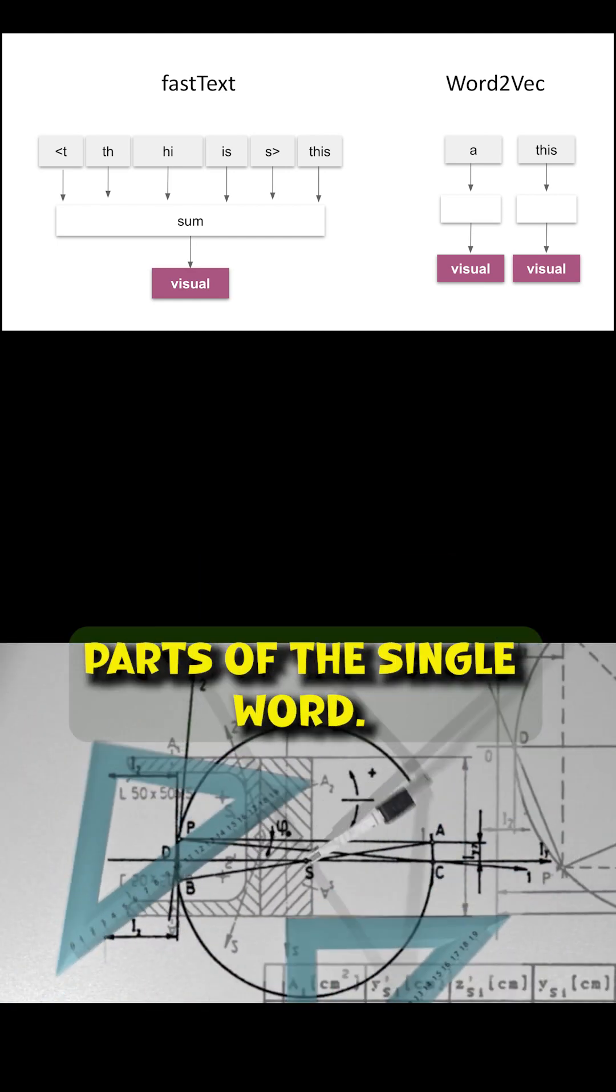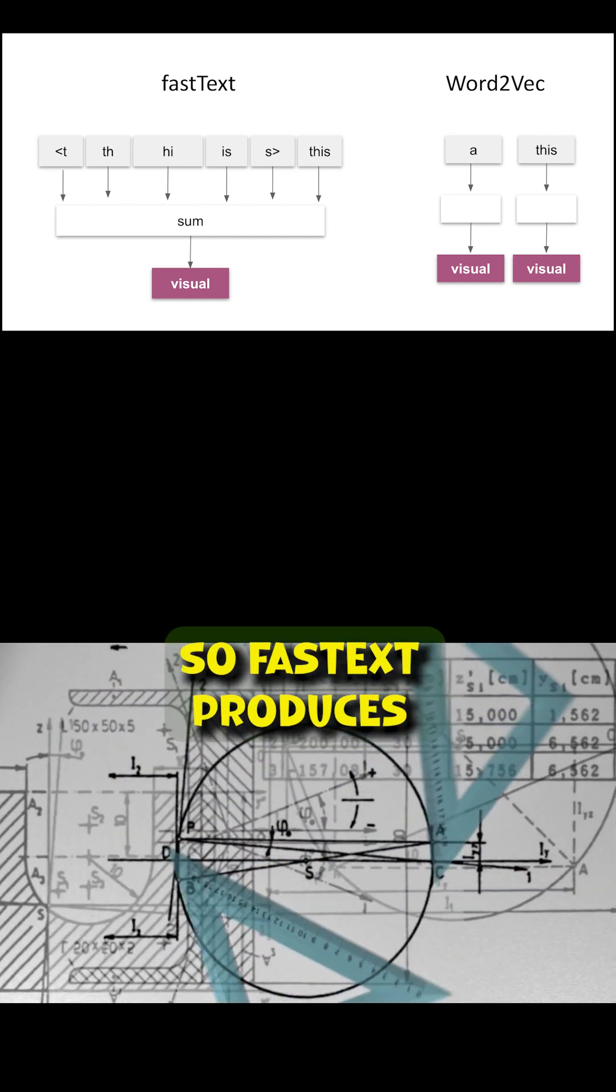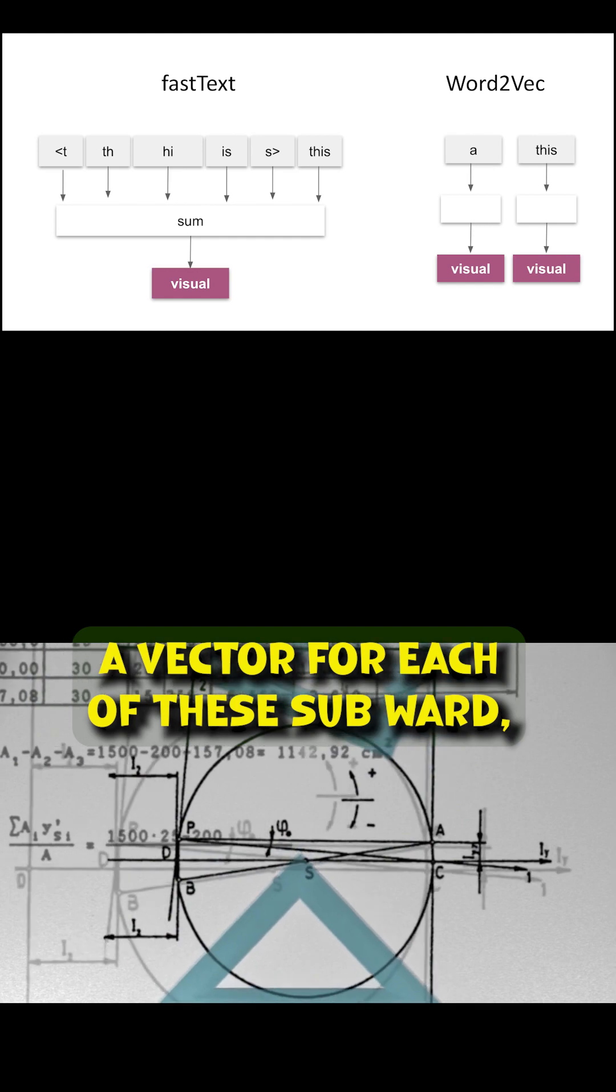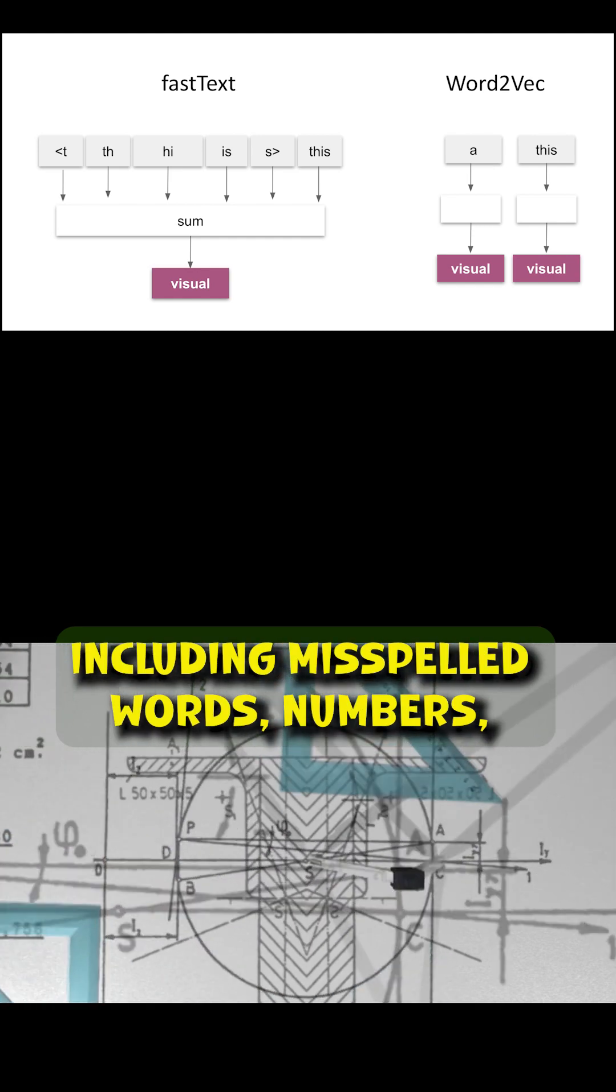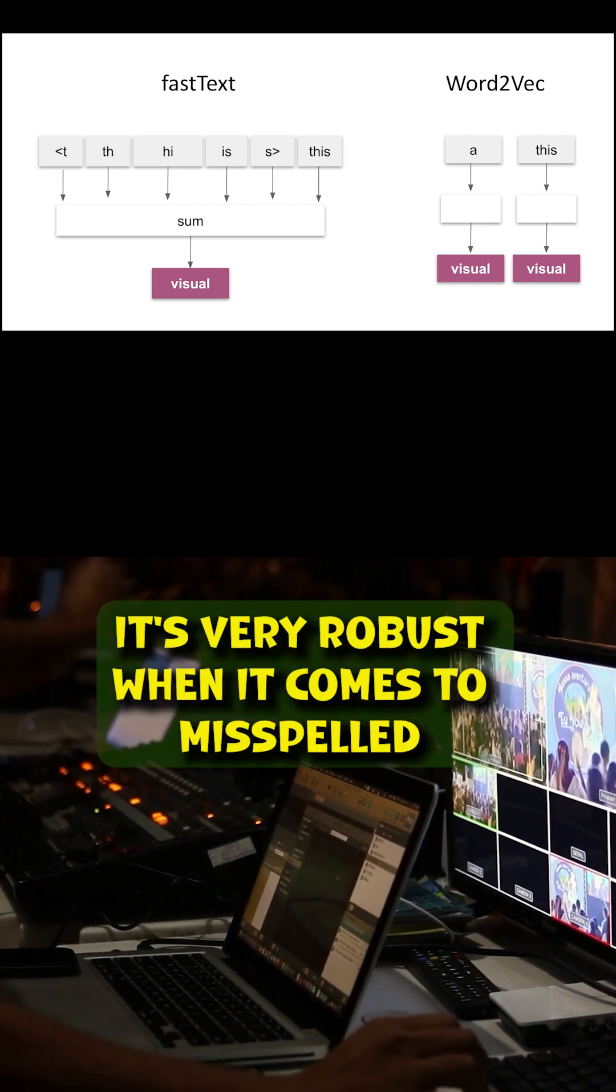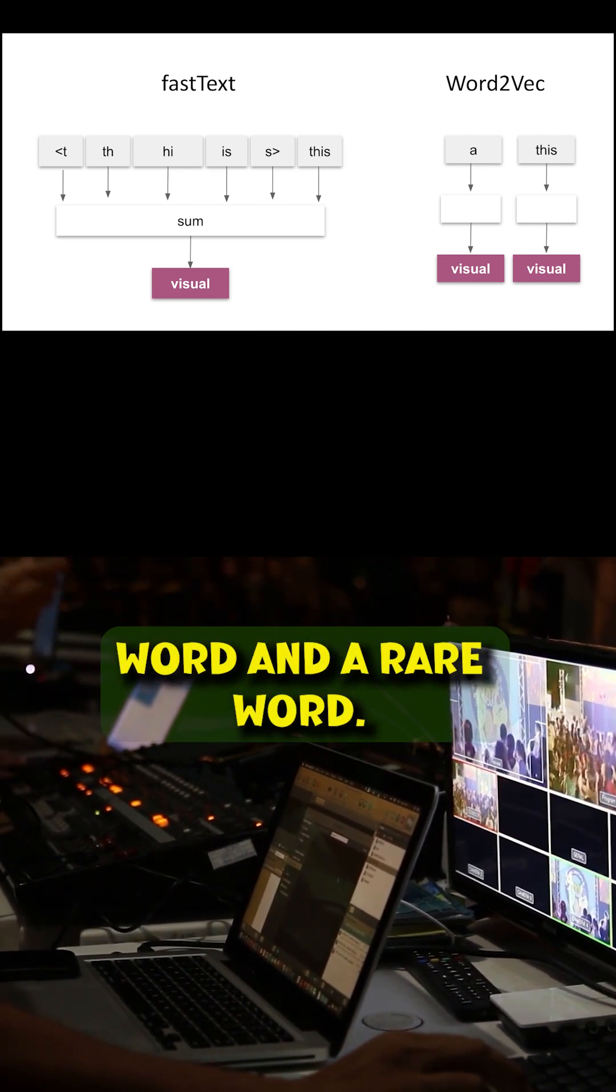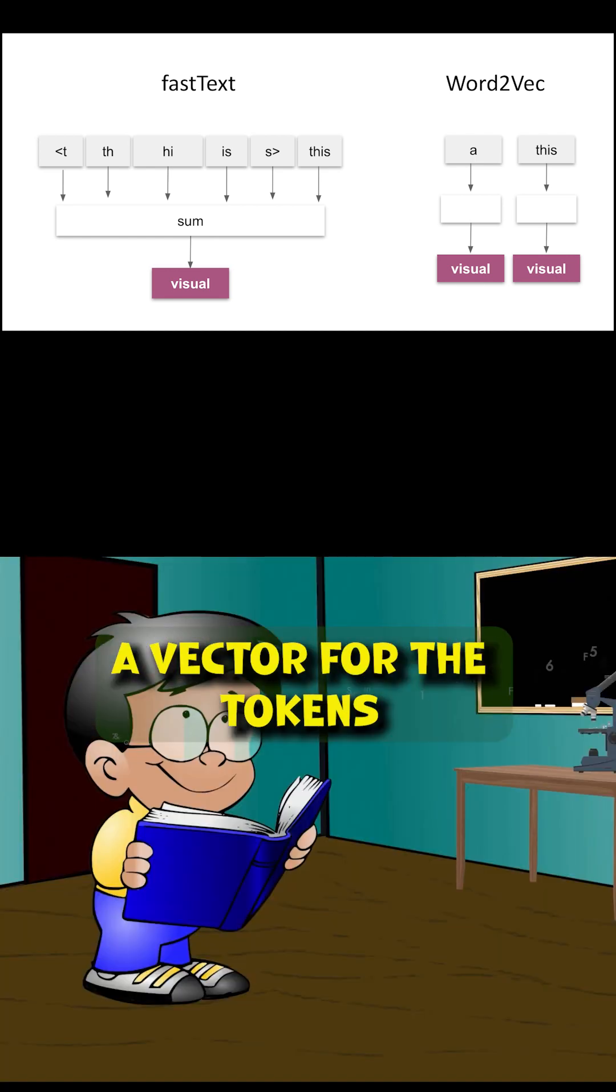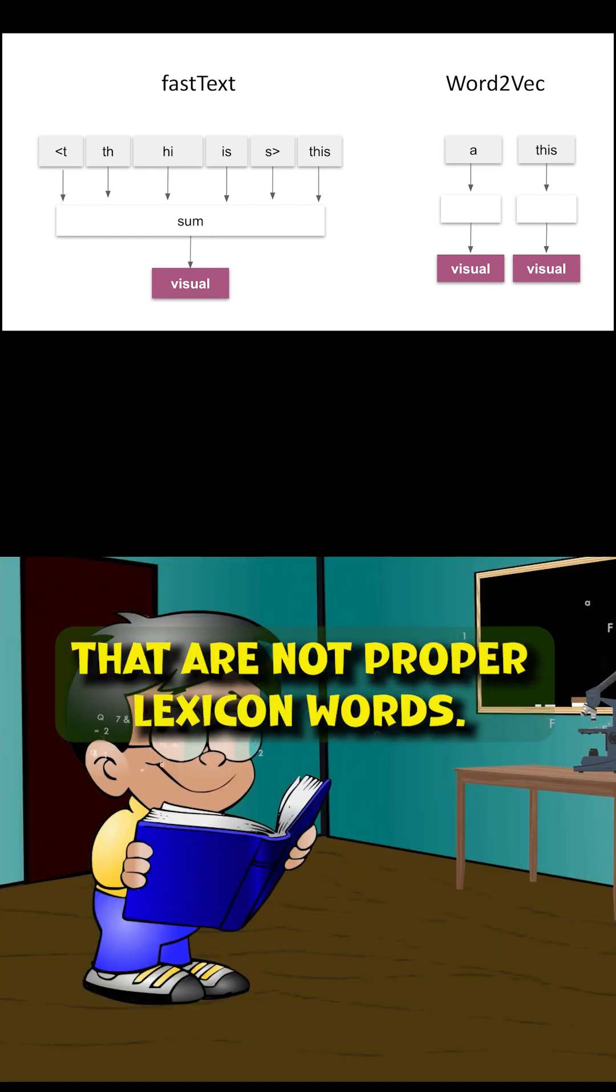FastText takes various parts of a single word and produces a vector for each of these subwords, including misspelled words, numbers, partial words, and single characters. It's very robust when it comes to misspelled and rare words, and can compute vectors for tokens that are not proper lexicon words.